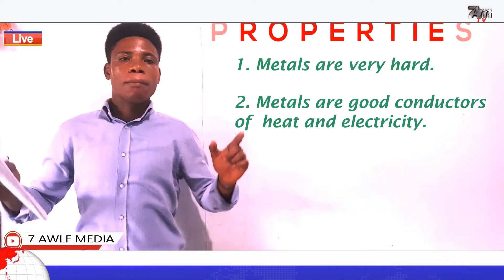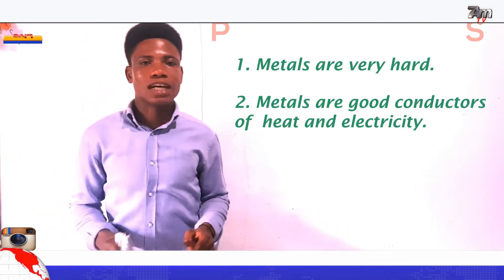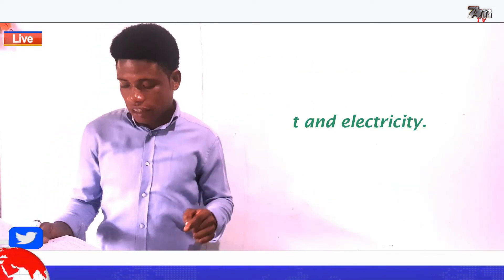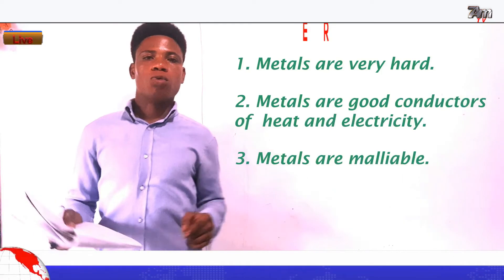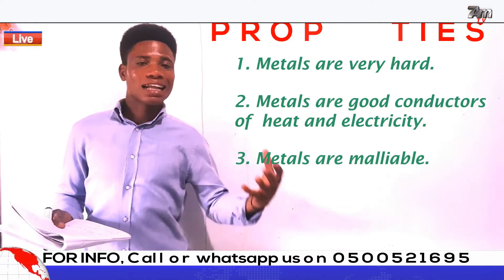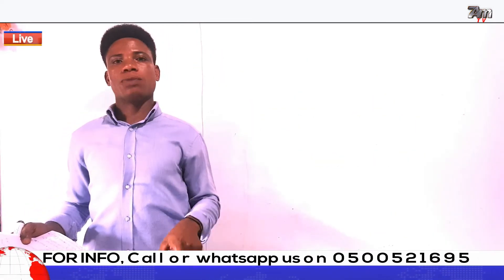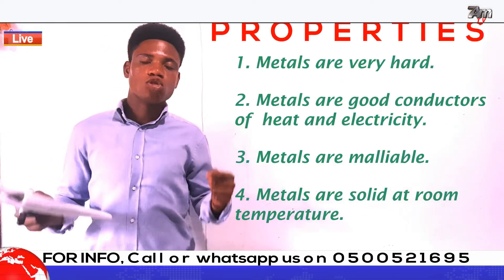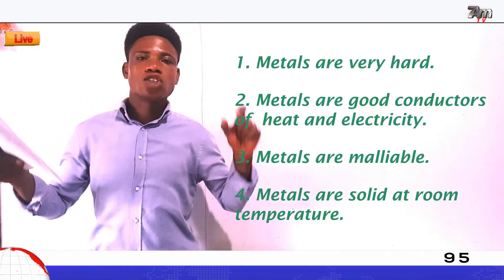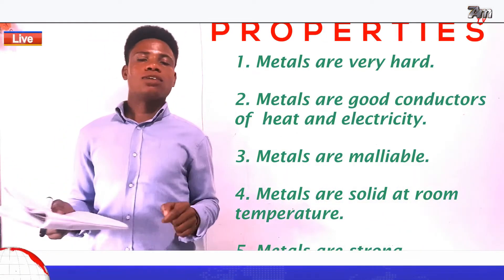Metals are good conductors of heat and electricity. Metals are also malleable — meaning they can be beaten into different shapes. For example, farm tools were beaten into their shape. Metals are solid at room temperature, and all metals are very strong.